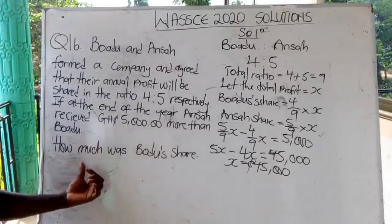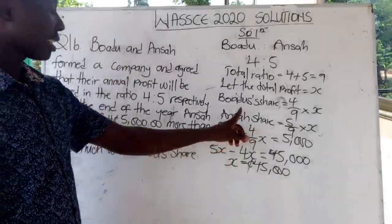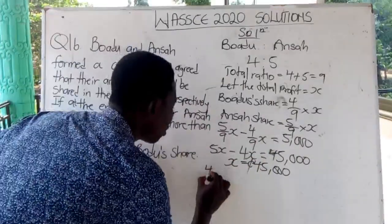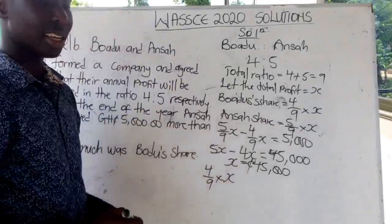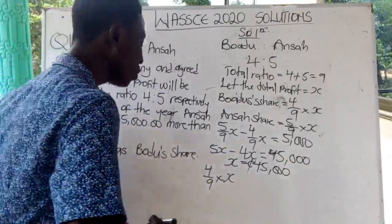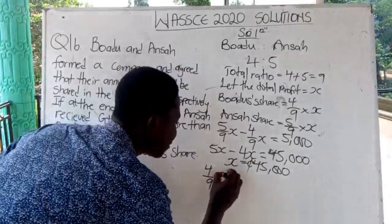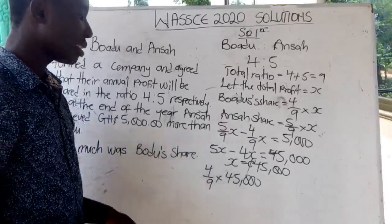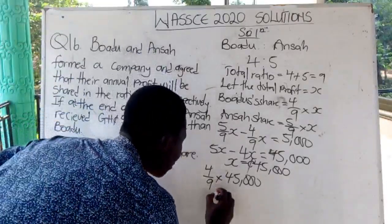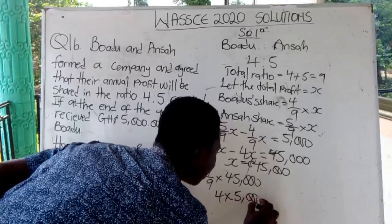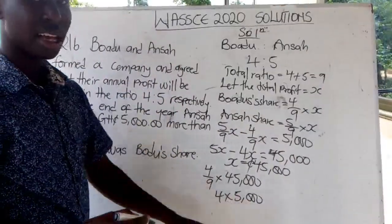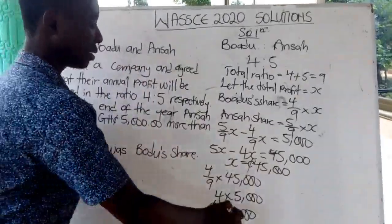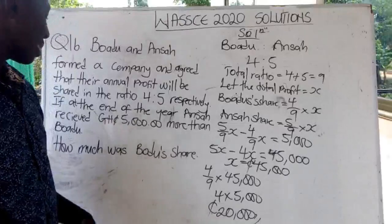Now for the actual question — how much was Bodi's share? Bodi's share equals 4 over 9 times x. Replacing x with 45,000: 9 goes into 45,000 five thousand times, so 4 times 5,000 equals 20,000 Ghana cedis. That is Bodi's share.